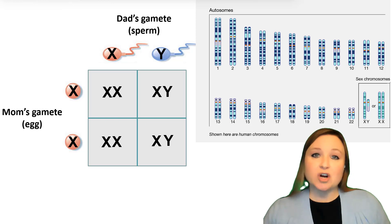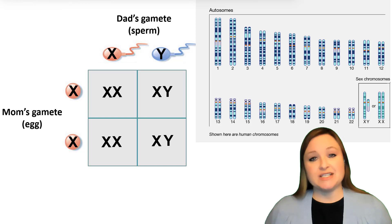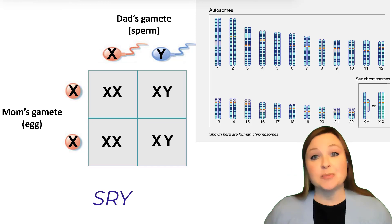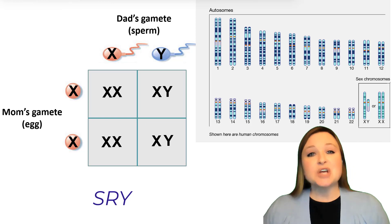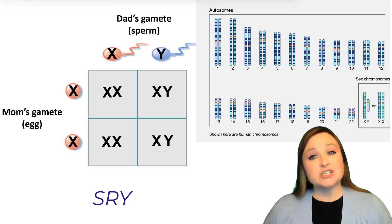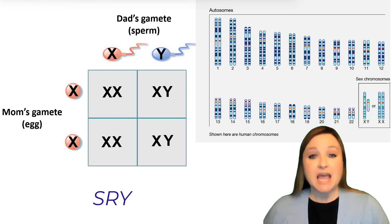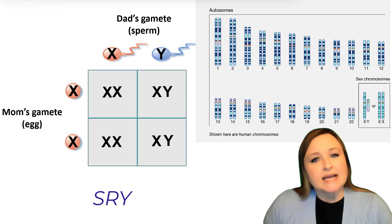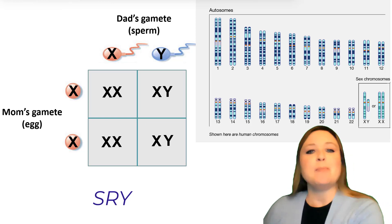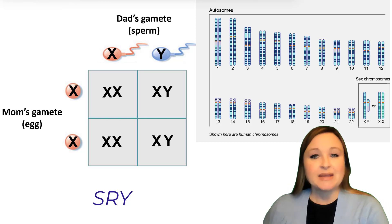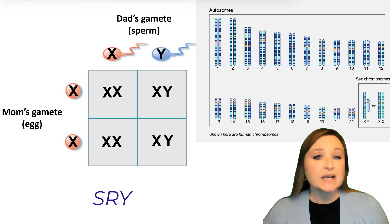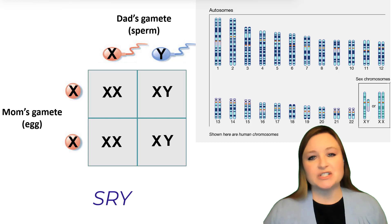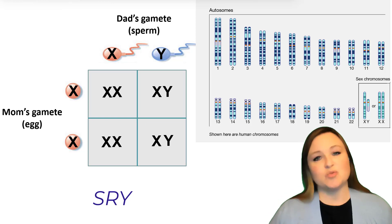On the other hand, the Y chromosome is pretty small and contains fewer genes. One of those genes is called the SRY gene, which stands for the sex-determining region on the Y chromosome. This SRY gene regulates the expression of genes that trigger male development of the embryo. So if there's a Y present in the developing embryo, the embryo's gonads are going to develop into male gonads — male sexual reproductive organs. If there's no Y present, and thus no SRY gene, then the default is for those sexual organs to develop into female reproductive organs.